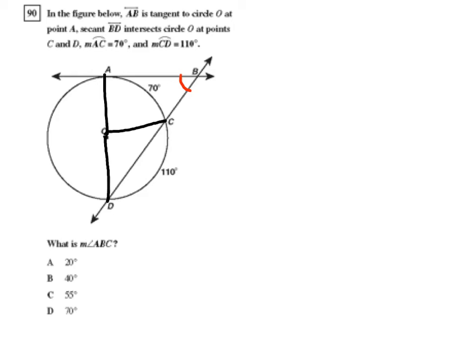So, being that arc CD has a measure of 110 degrees, the angle whose vertex is at the center of the circle that intersects points C and D on the circle also has a measure of 110 degrees here.